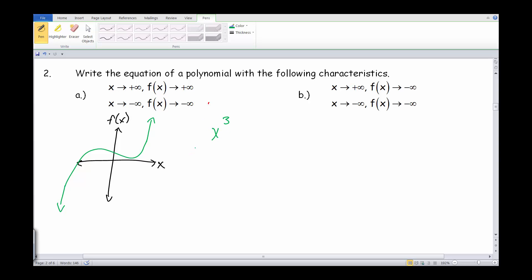And as a result, we know that that has to be an odd degree there. So like x cubed, that could be a prime example of one. So f of x, again, is the same thing as saying y is equal to x cubed.